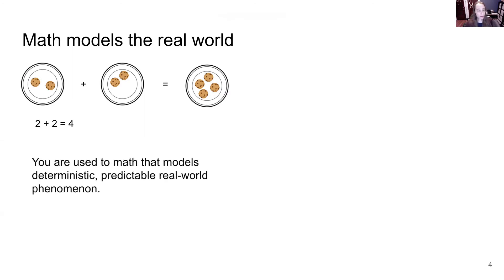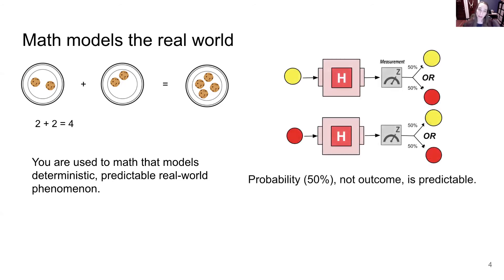And so we're used to a lot of math that models deterministic, predictable, real world phenomenon. Quantum is another set of real world phenomenon. It is quantum mechanics, it is real, and it happens at very small atomic levels. But we have to have a mathematical model that allows us to predict it.